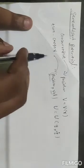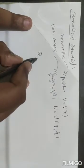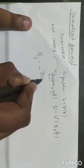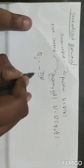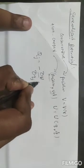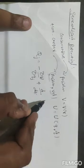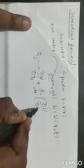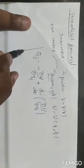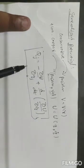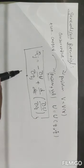So U is equal to U(q, q̇), and Qj = -∂U/∂qj + d/dt of ∂U/∂q̇j. This is one important formula — the generalized potential formula.